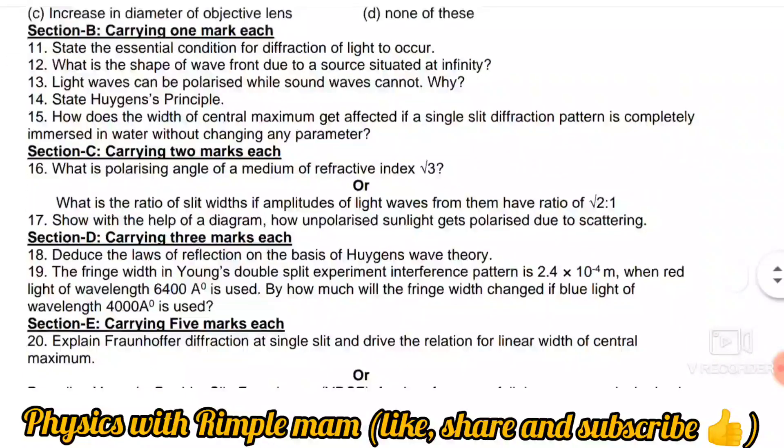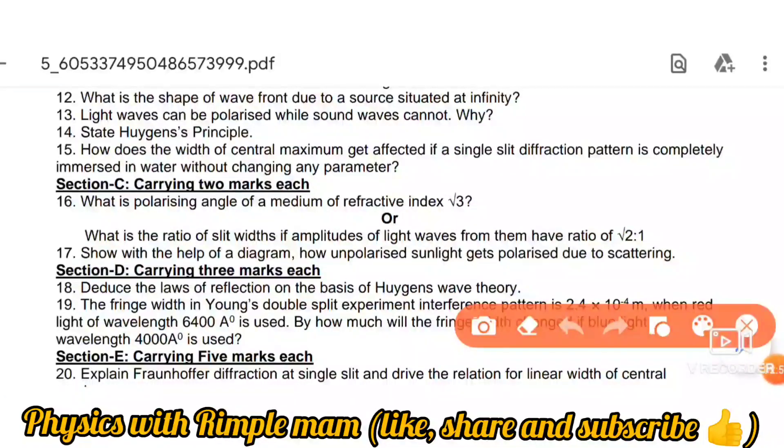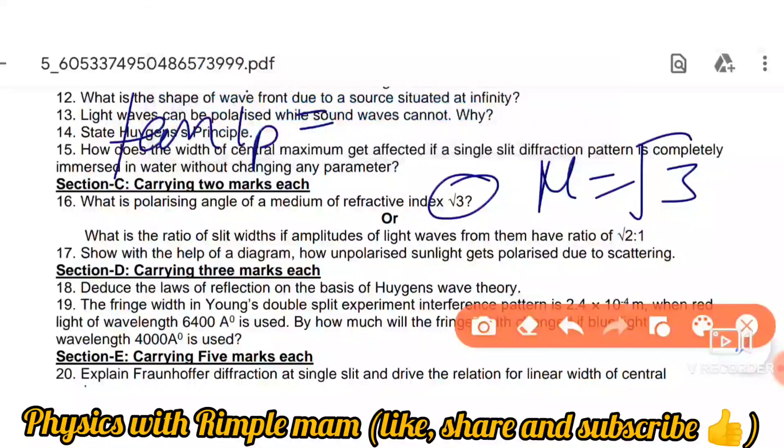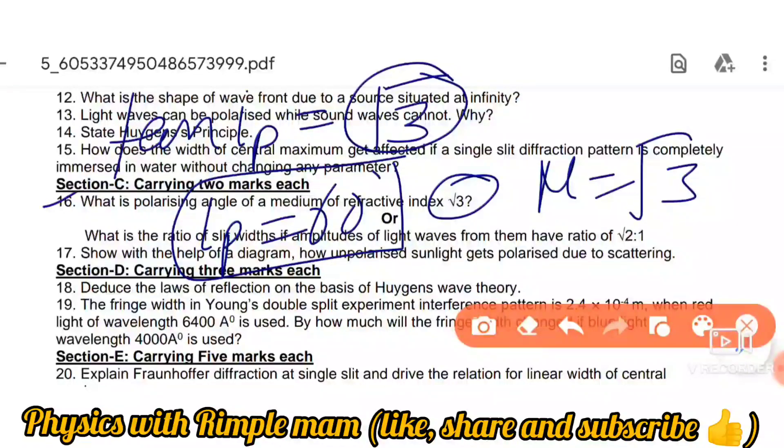Question 16: What is the polarizing angle of a medium of refractive index root 3? We are given mu equals root 3, and the formula is tan ip equals mu. So tan ip equals root 3, which means ip equals 60 degrees. So the answer for 16a is 60 degrees.